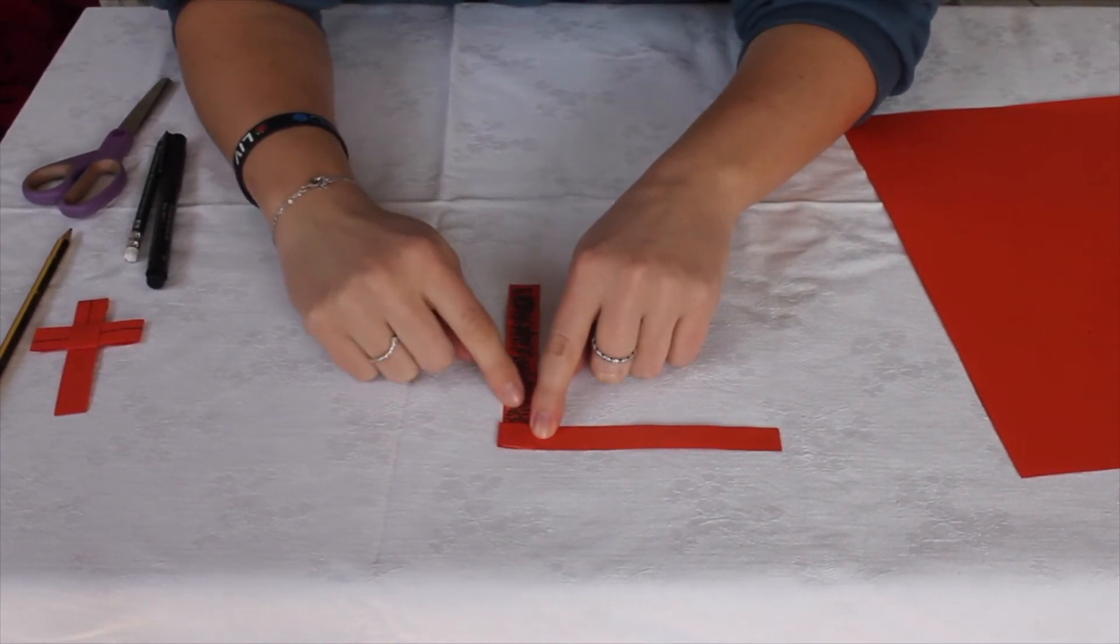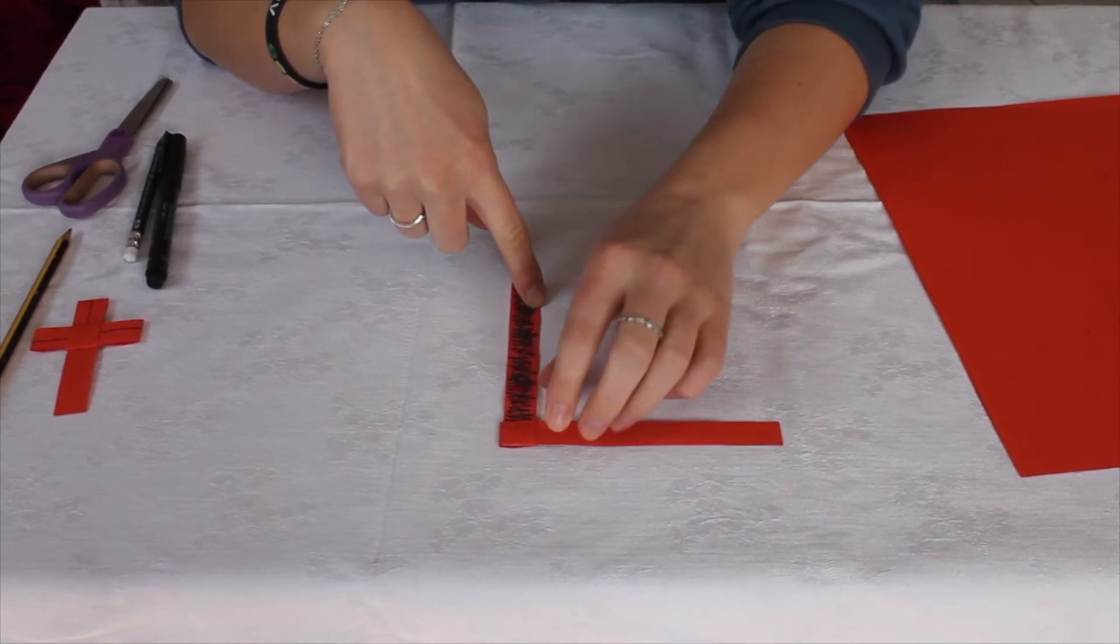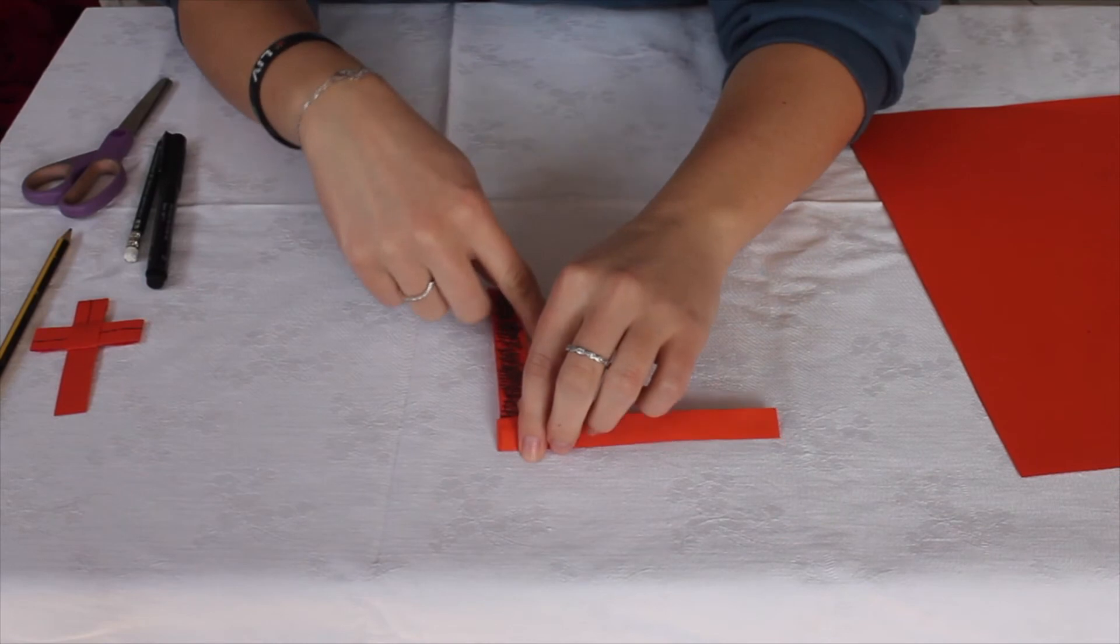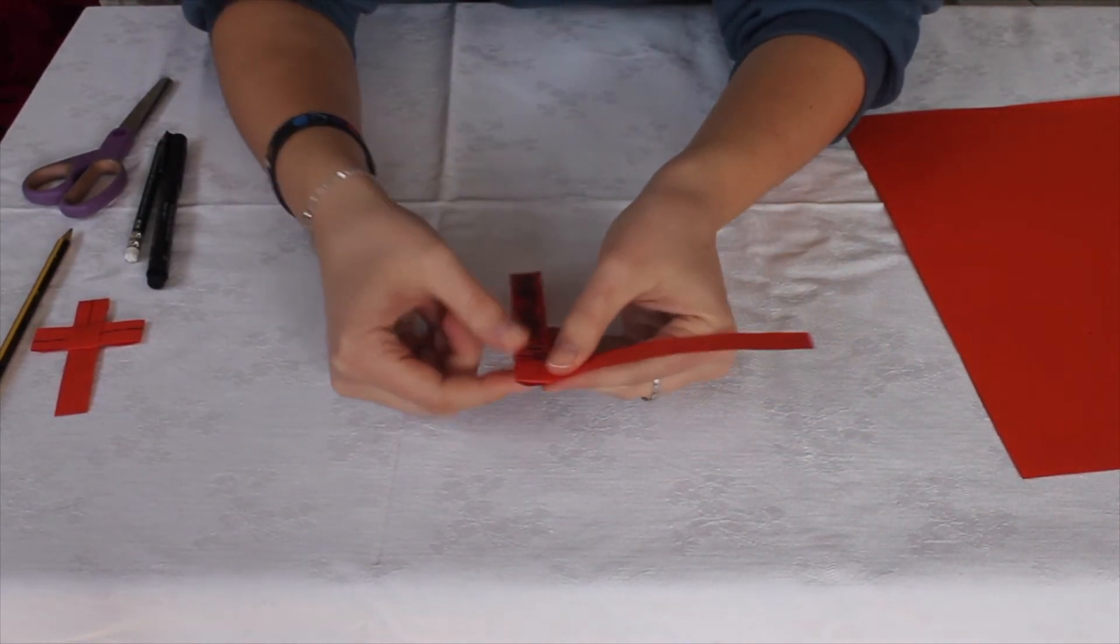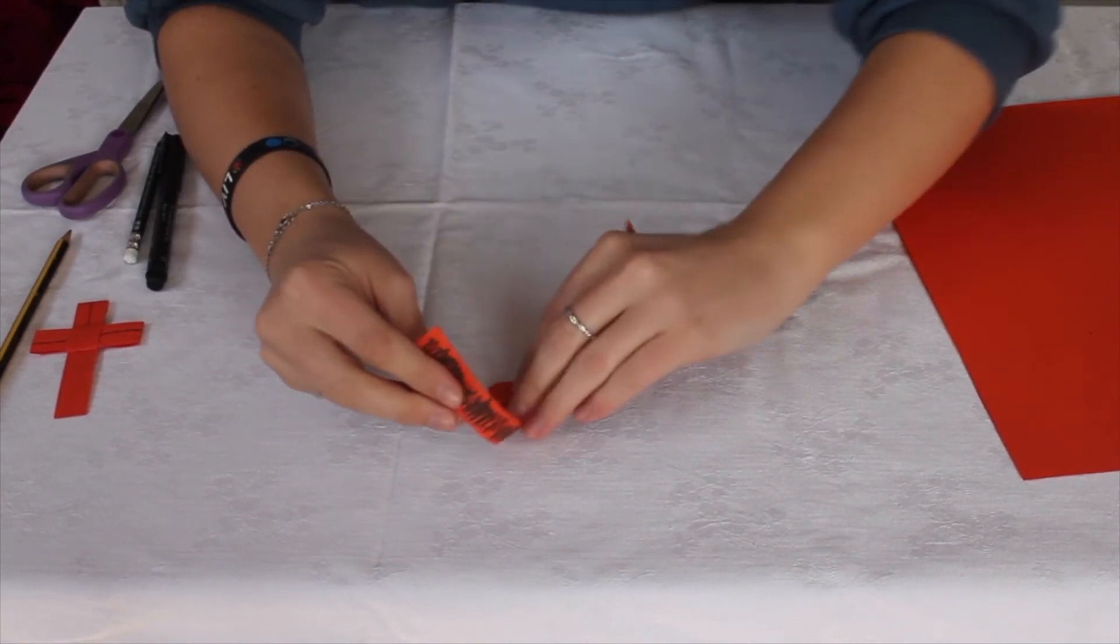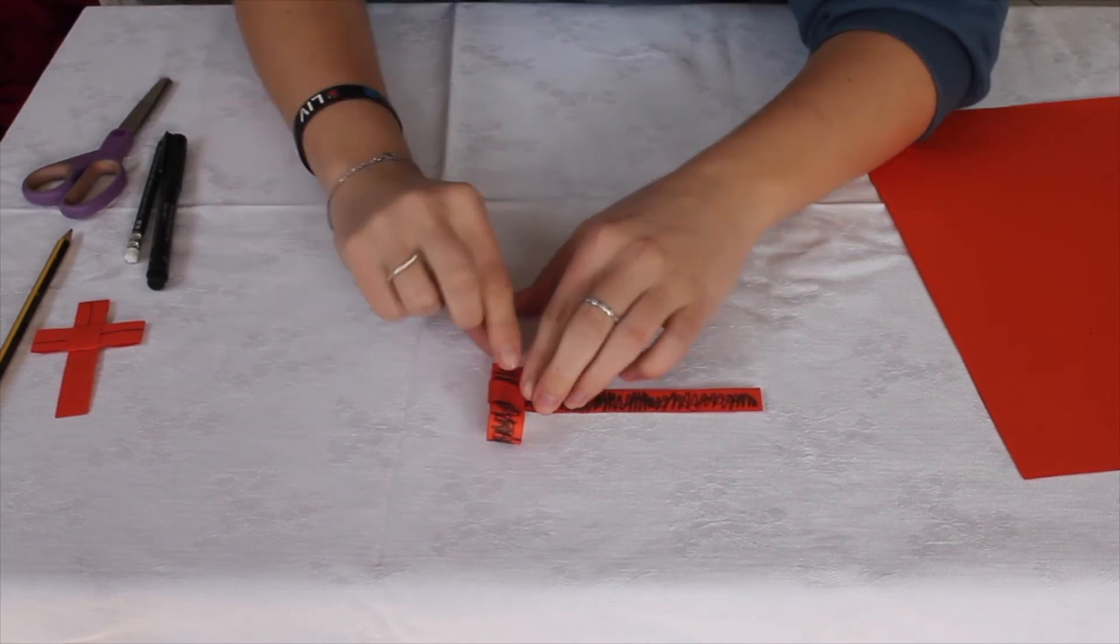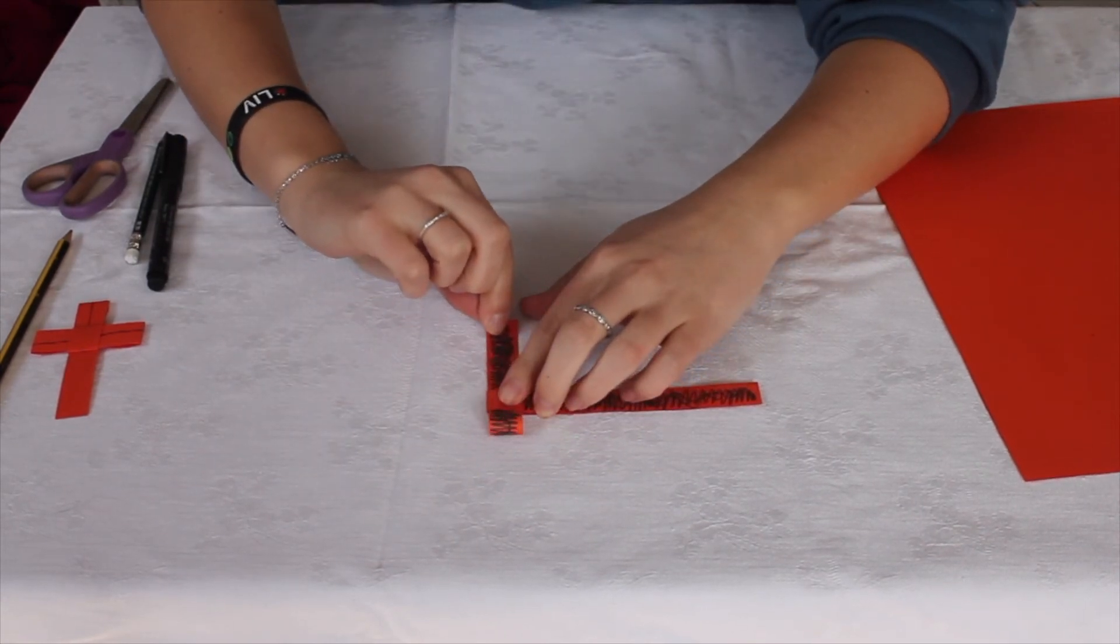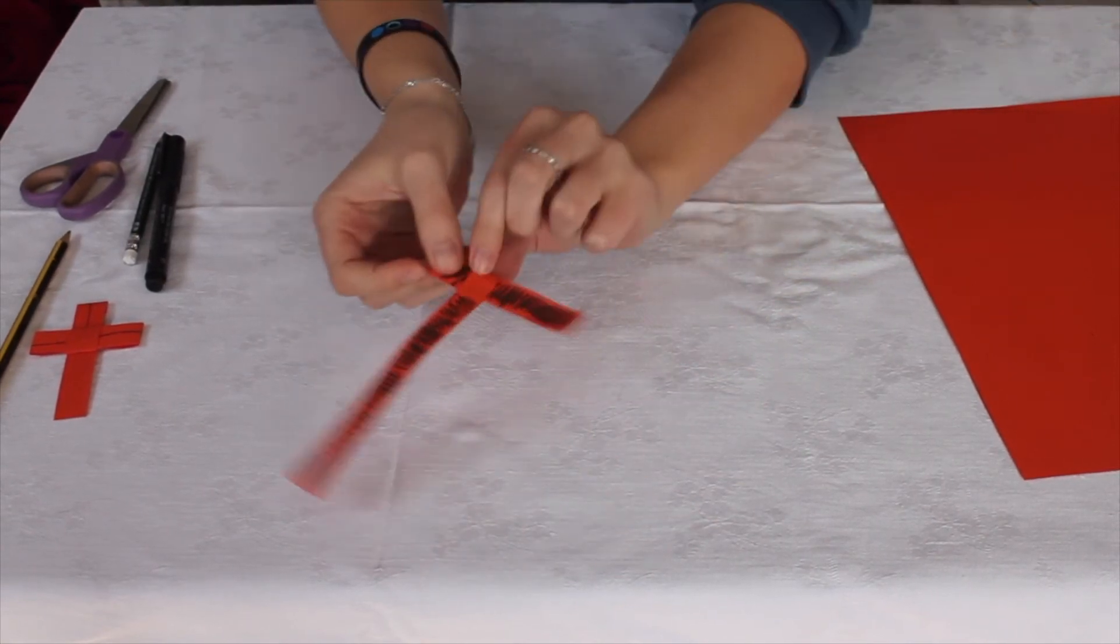We are now going to use this bit here and this is going to make our vertical of the cross. So take this, you should find it slightly shorter and fold it backwards and you're going to fold it through the pocket here like so. And you might just want to give that a pinch there, like so, and that makes our vertical of the cross.